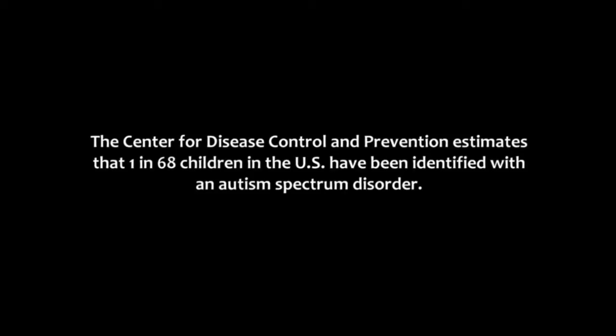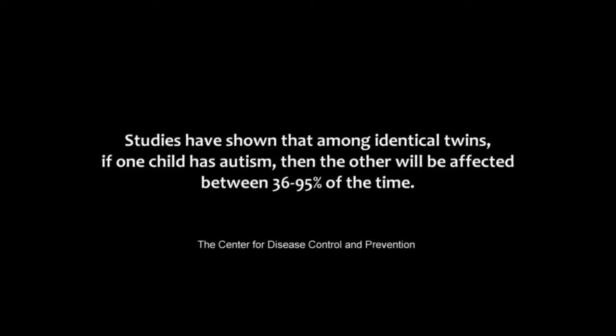Autism is a developmental disorder — we would call it a neurodevelopmental disorder — so it involves differences in how the brain develops. The differences mainly seem to affect social interaction, and they also lead to this category of behaviors that we call repetitive and stereotyped interests and behavior. Autism also often involves differences in how children are able to communicate, and differences in various kinds of cognitive abilities as well.